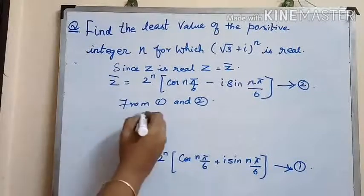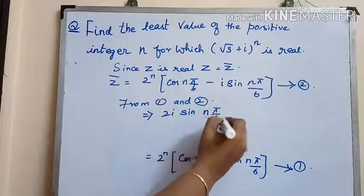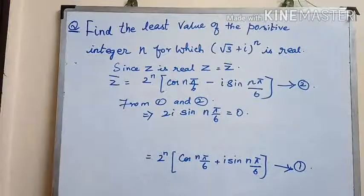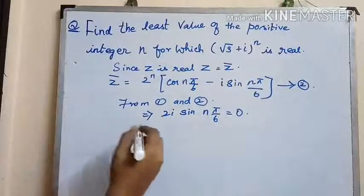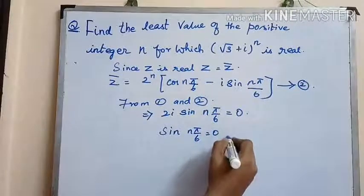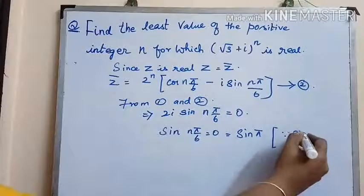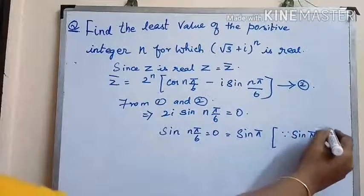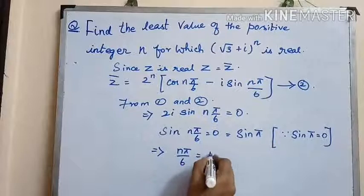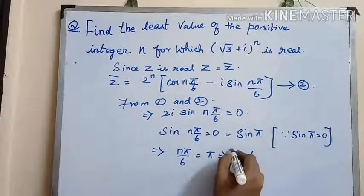From 1 and 2, we get 2i·sin(nπ/6) = 0. So equating it to sin(nπ/6) = 0, from which we get the value of n as 6.